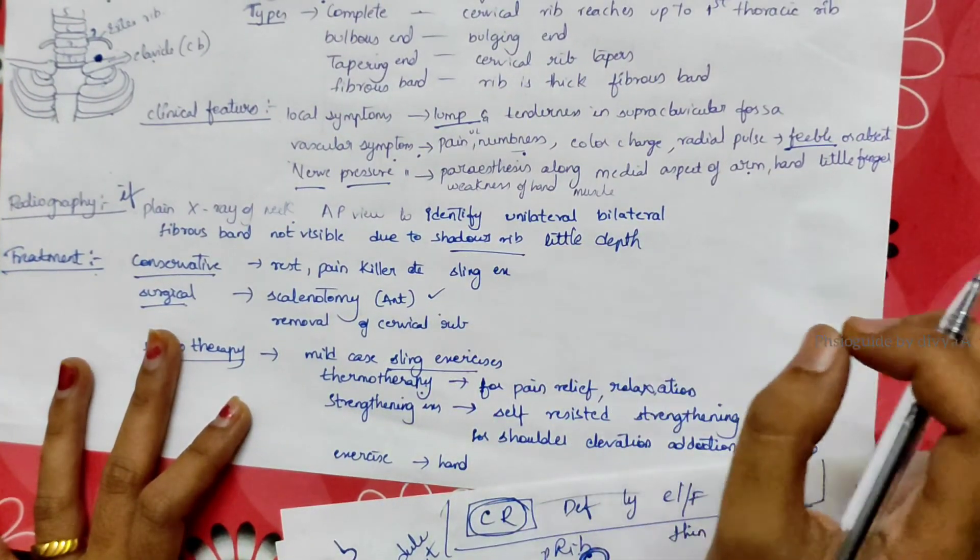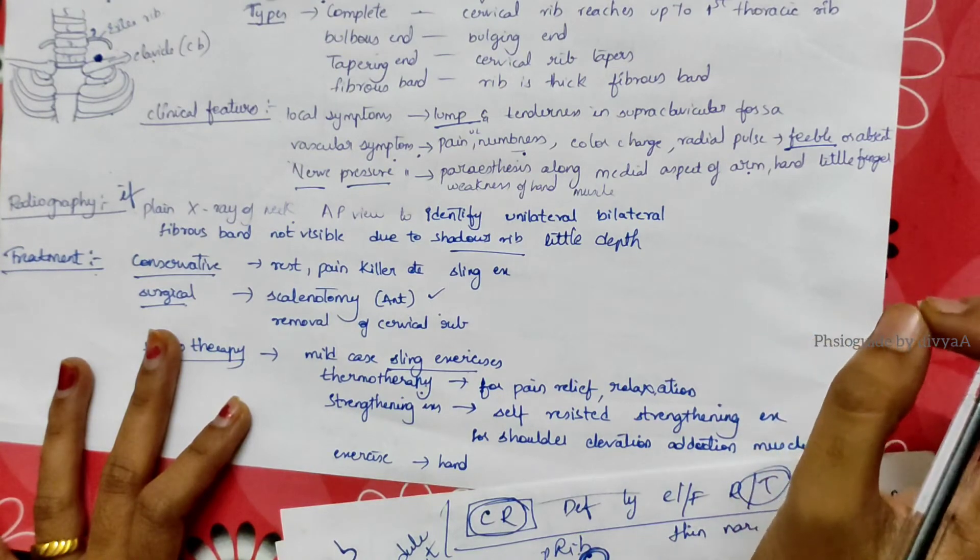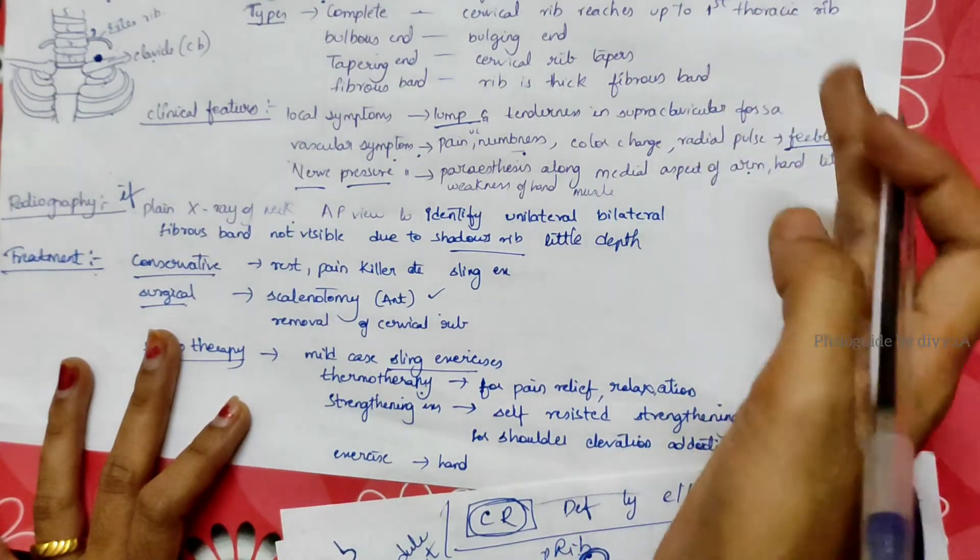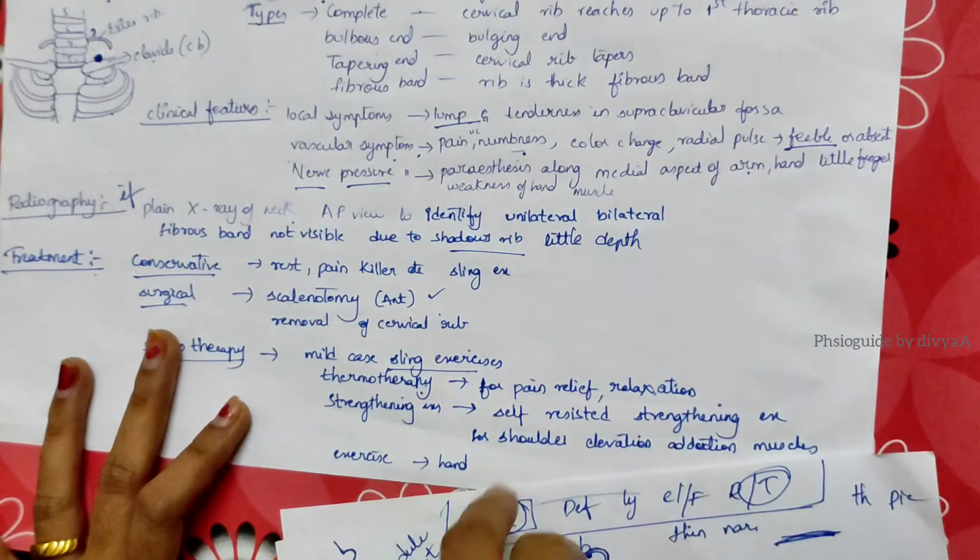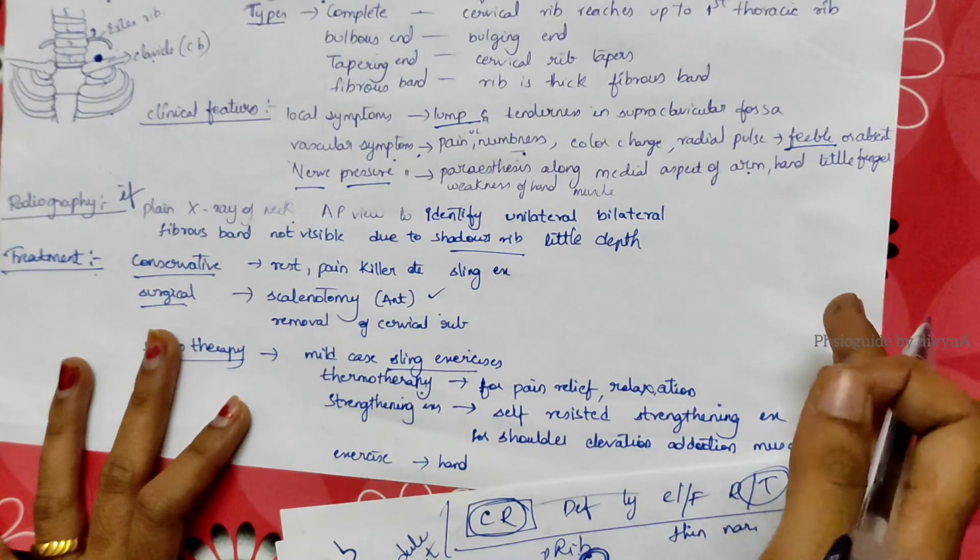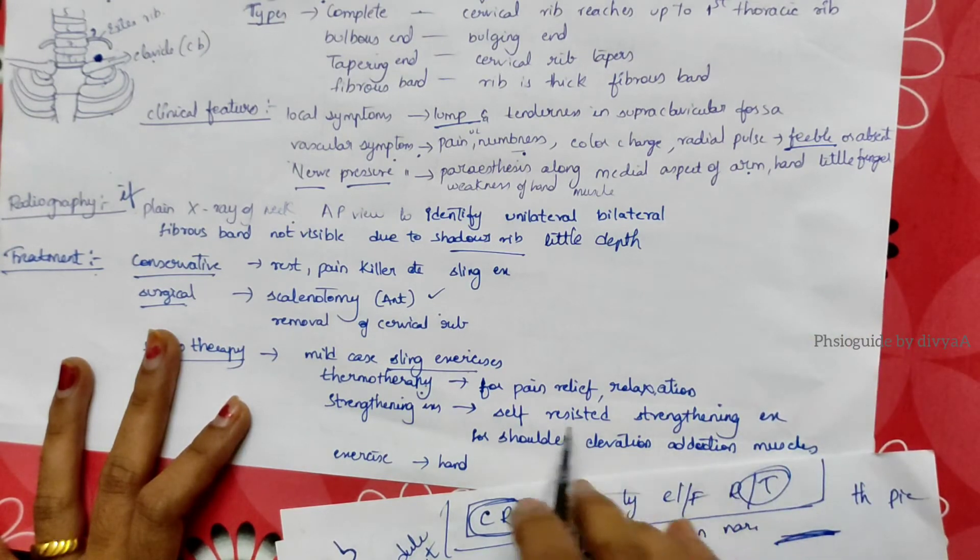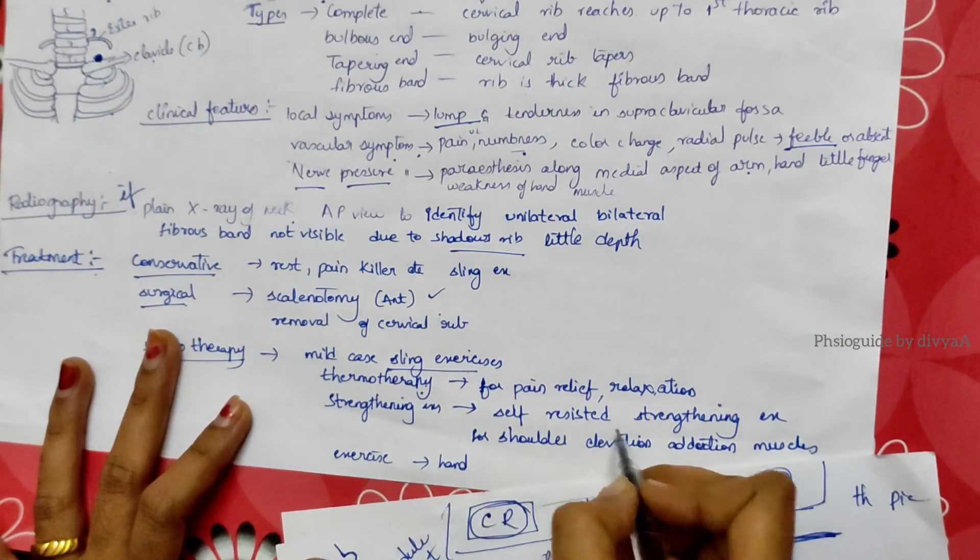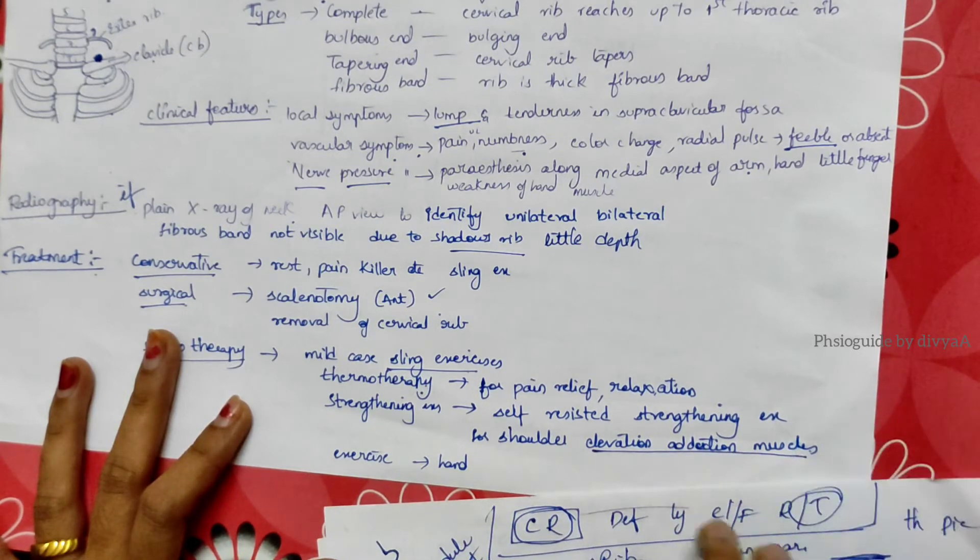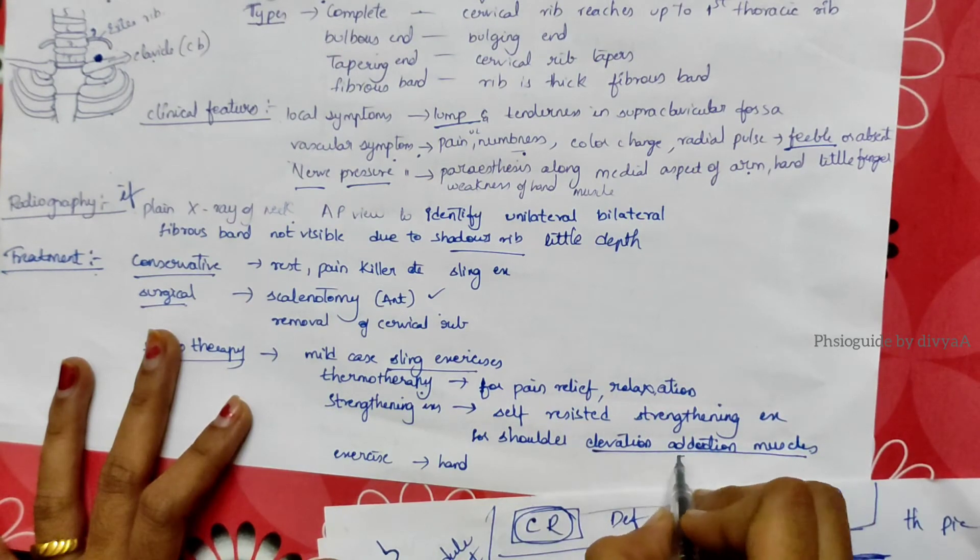All assisted exercises can be given to the patient like pendular exercises, wall exercises, towel exercises, anterior abduction exercises, posterior elevation, and self-resisting exercises for shoulder elevation and adduction muscles. We have to concentrate on this.